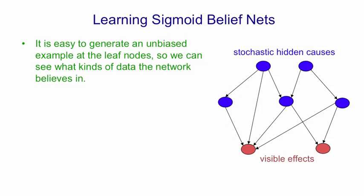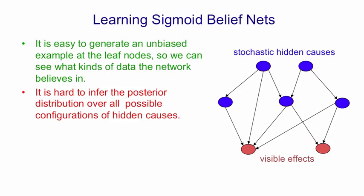Now I'm going to talk about why it's difficult to learn sigmoid belief nets. As we've seen, it's easy to generate an unbiased sample once you've done the learning. Once we've decided on the weights in the network, we can easily see the kinds of things the network believes in by generating samples from its model. This is done top-down, one layer at a time — it's easy because it's a causal model. However, even if we know the weights, it's hard to infer the posterior distribution over hidden causes when we observe the visible effects.